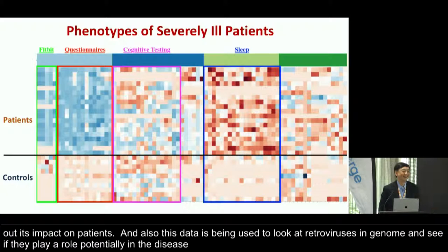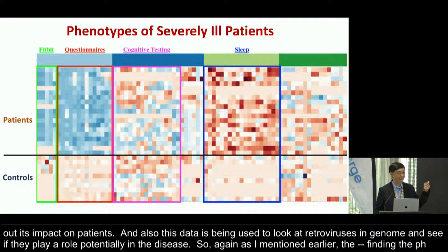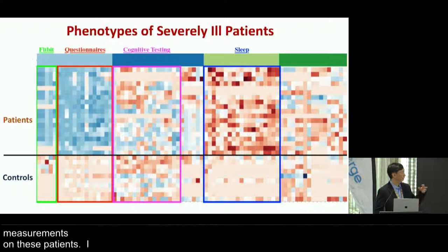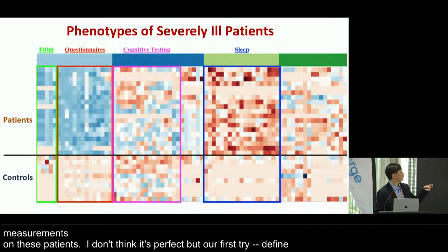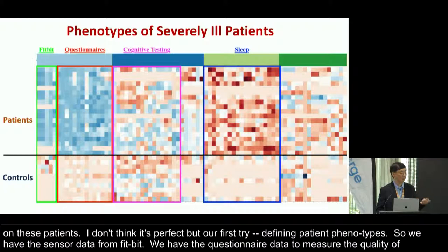Defining the precise phenotypes of ME-CFS patients is a challenge. We used four types of measurements on these patients — this is not perfect, but it's our first try. We have sensor data from Fitbit, and questionnaire data to measure quality of life, for example SF36, Karnofsky, or PROMIS, to compare patients versus controls. There is a clear difference between patients and controls.